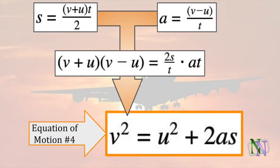The fourth equation is also found by combining two equations. If you are interested in how it's done, pause the video and study this derivation. The resulting equation is V squared equals U squared plus 2AS, which uses all of the variables except for T.